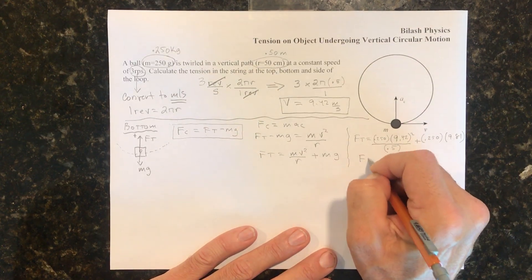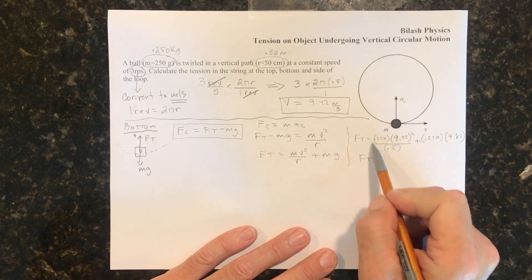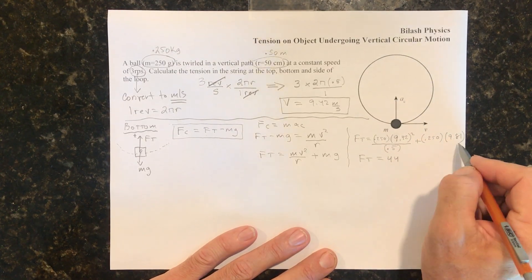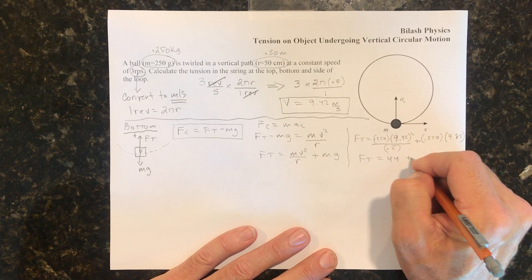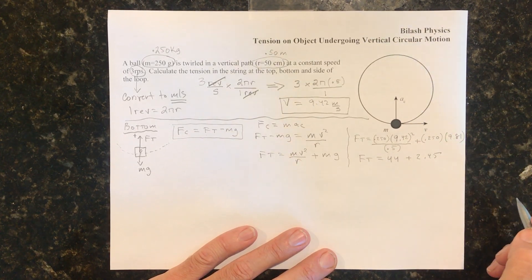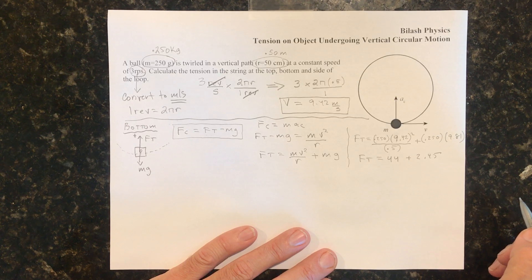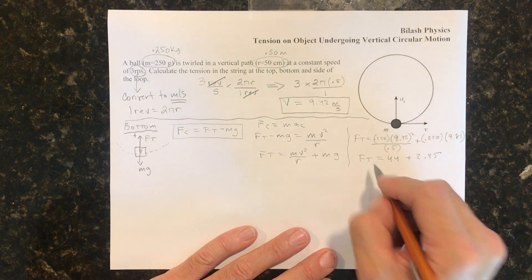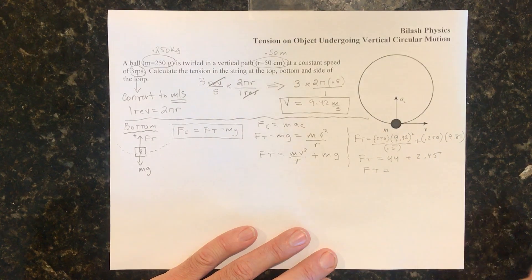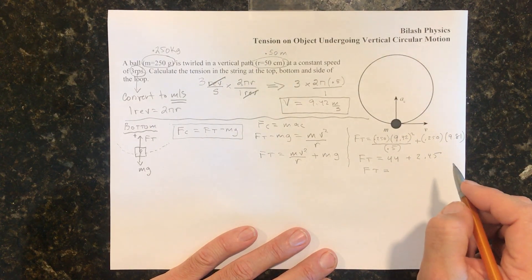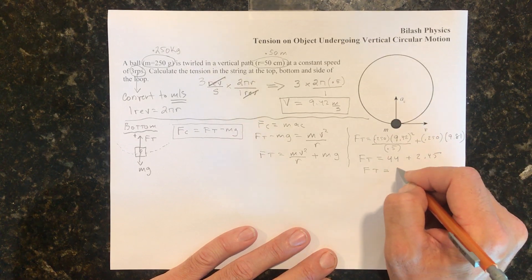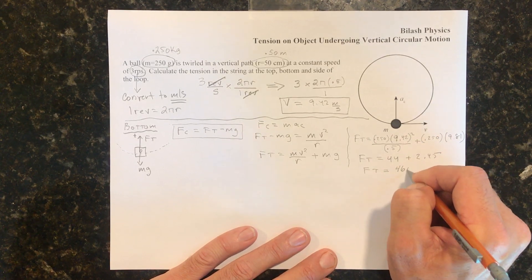So Ft, well, this portion right here works out to 44. And this portion here works out to 2.45. So when you add this up, let's round to the whole number. Ft is going to be equal to 46.45. Let's just call that 46 newtons.